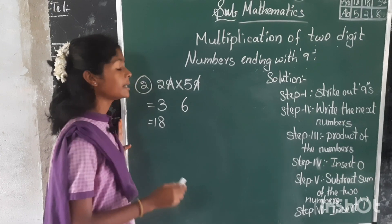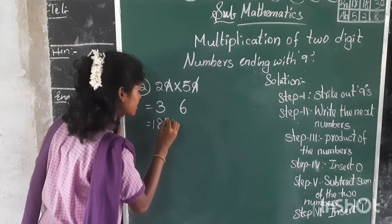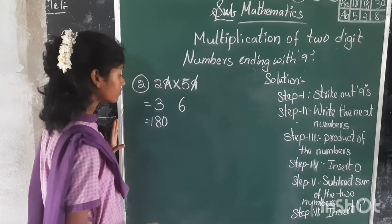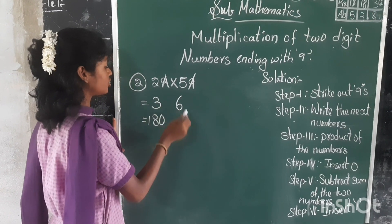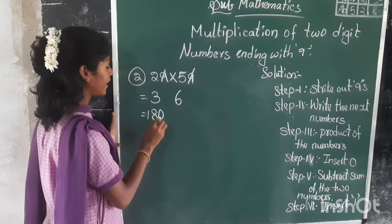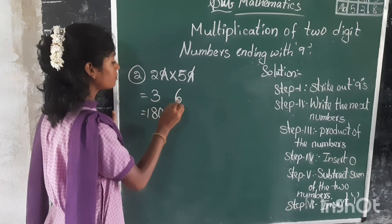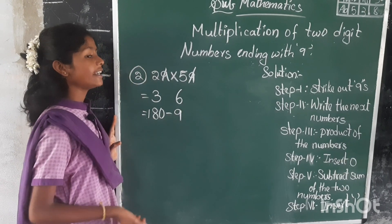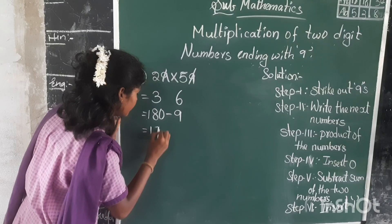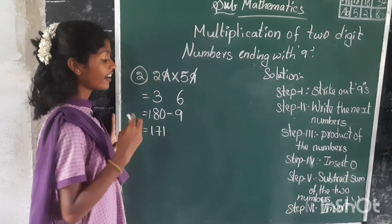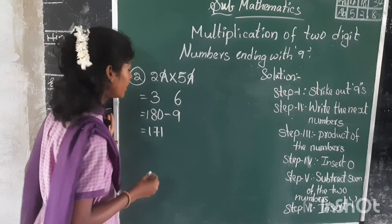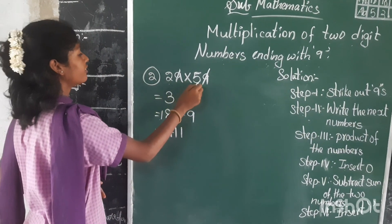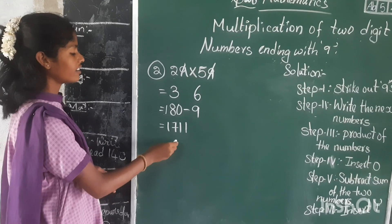The fourth step: insert 0. We need to insert 0. The fifth step: we need to add these two numbers and subtract from 180. What is the sum of these two numbers? 9. So 180 minus 9 is 171. The final and last step: insert 1. We need to insert 1. The product of 29 and 59 is 1711.